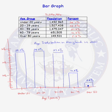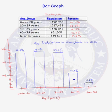We notice that the proportion of people under 20, between 20 and 39 years of age, and between 40 and 59 years of age is almost identical in the state of Maryland in the year 2000. But we see that only 12.3% of all Maryland residents in 2000 were between 60 and 79 years of age, and only 2.8% were over 80 years of age. Here we have the age distribution in Maryland in 2000 displayed using a bar graph.